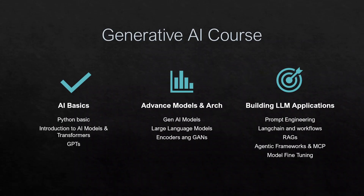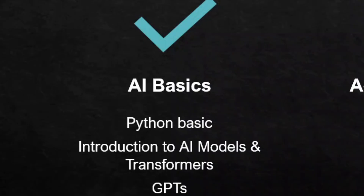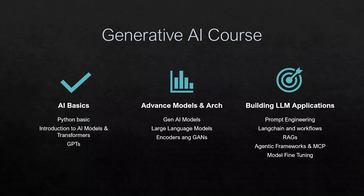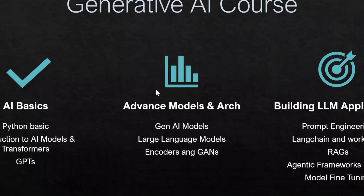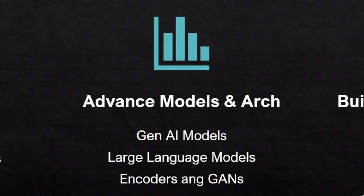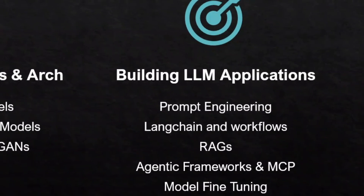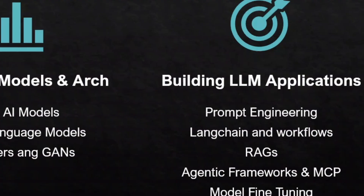In the course we are going to cover AI basics as module one, including AI history, then Python basics at a minimal level so we can understand the code. We'll touch on AI models, transformers, and GPTs — generative pre-trained transformers. In the more advanced module we'll cover LLM models, architecture, generative AI models, encoders, and GANs in detail.